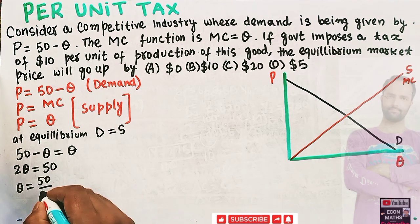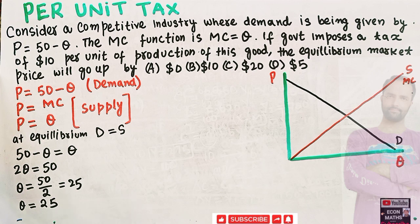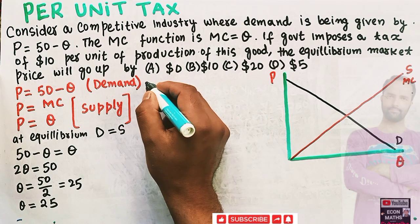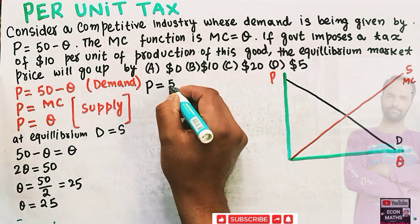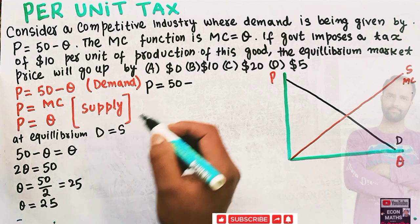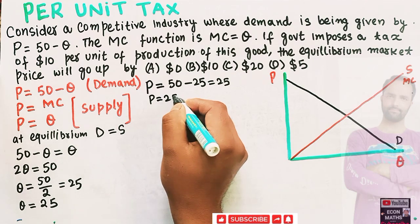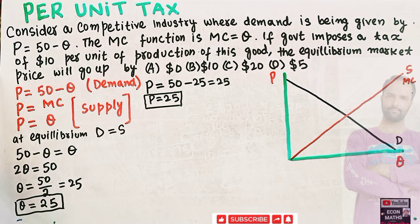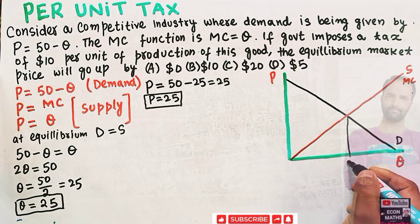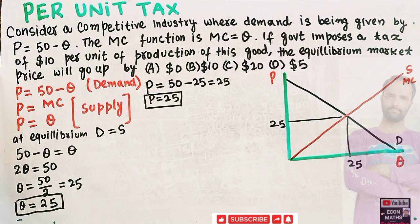Solving gives us Q = 25, so the equilibrium quantity before the imposition of tax is 25. The corresponding equilibrium price is found by plugging Q = 25 into the demand function: P = 50 minus 25 = 25. So our pre-tax equilibrium is Q = 25 and P = 25, which we can mark on the graph.